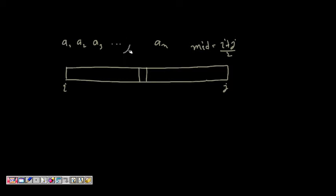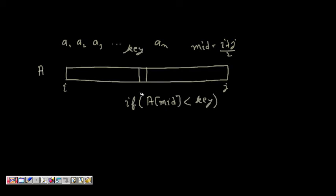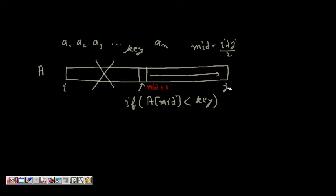We have a key that we need to find. If a[mid] is less than the key, it means — because the array is in ascending order — that our number will be found in the right part of the array, and we can discard the left part. So we now search from mid + 1 till the end.